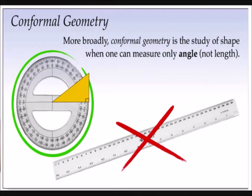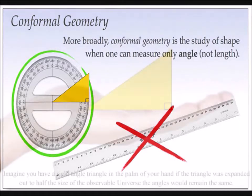In conformal geometry, angles remain the same while losing the notion of scale.